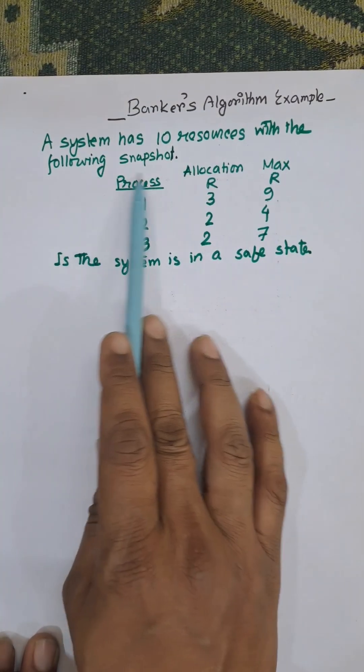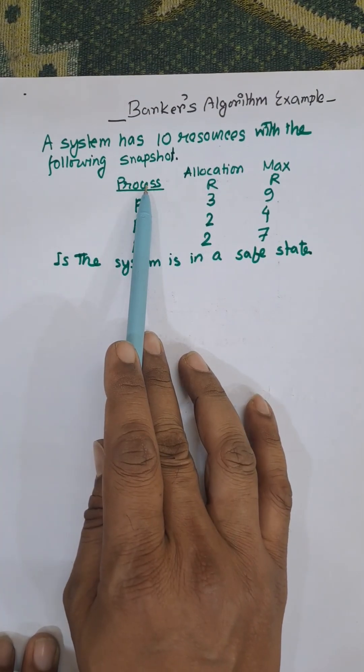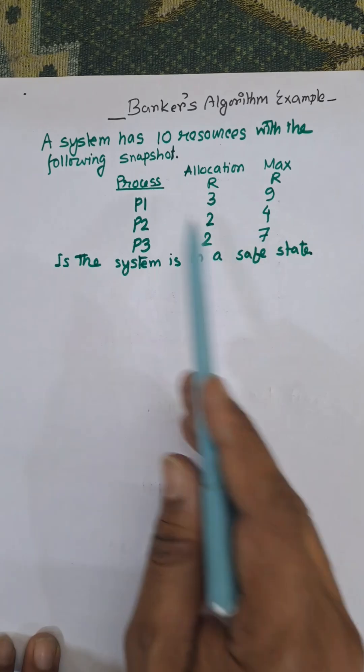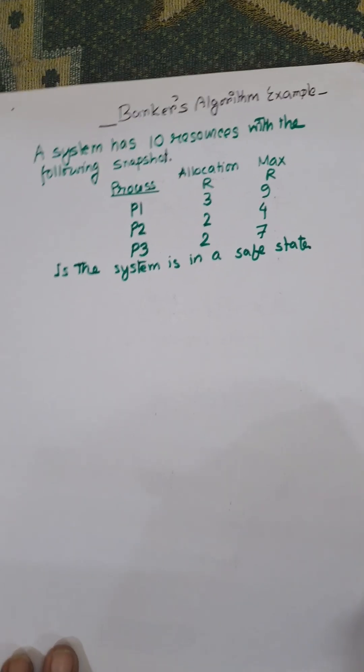System has 10 resources with the following snapshot: process, allocation and max. We will check whether the system is safe or not.